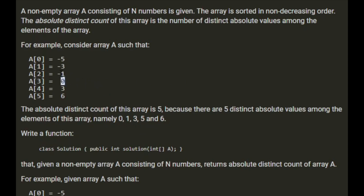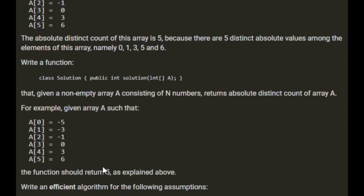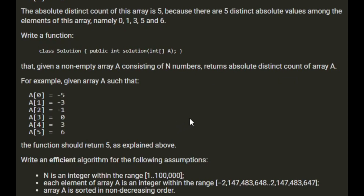0, 1, 3 — which we have twice — 5 and 6. Write a function that, given a non-empty array A consisting of N numbers, returns the absolute distinct count of the array. So in that example, we should return 5.